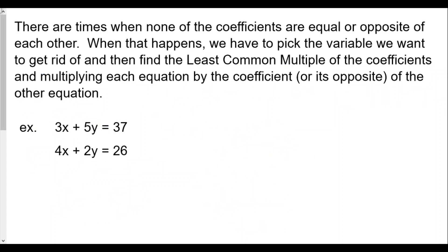There are times when none of the coefficients are equal or opposite to each other. When that happens with elimination, we have to find the least common multiple of the coefficients, then multiply each equation by the appropriate value. For example: 3x plus 5y equals 37 and 4x plus 2y equals 26. Let's say we want to eliminate the x values. The coefficients of x are 3 and 4, so the least common multiple is 12.